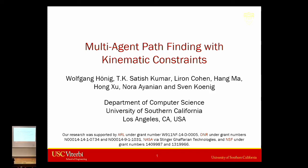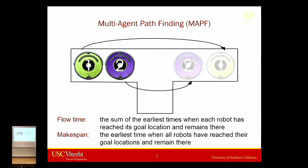I want to talk about multi-agent path finding with kinematic constraints. The problem is a very simple one. You're given an environment, you know the environment, there's a bunch of robots that navigate in this environment, you know where they are, you know where you want them to be, and you just need to find paths that navigate them from where they are to where they should be, so that the robots don't collide.